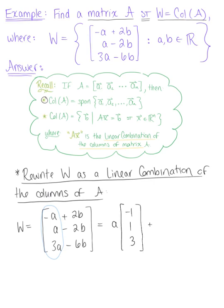And this is plus our second column vector here defined by B. We can pull that scalar B out in front, leaving us with the column vector 2, negative 2, minus 6.